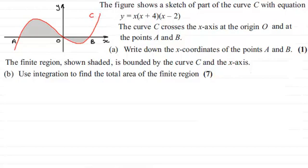OK, welcome back. So at the points A and B, y would be equal to 0. And because this is factorized, then it will either be this factor, x that would equal 0, well that's the origin,